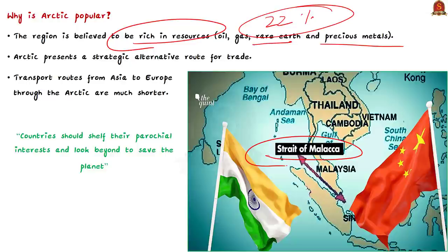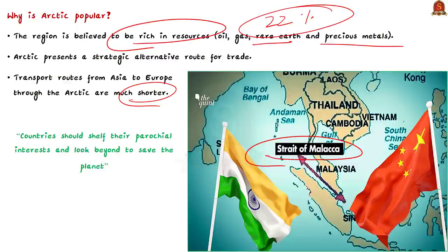The Strait of Malacca is becoming very contentious as traffic increases, and many countries are competing on this trade route. China is now looking for alternative routes through the Arctic Circle to bypass these busy routes. Routes through the Arctic are much shorter — they take less time and consume less energy. This is why many countries are now interested in Arctic trade routes, and China is leading this exploration from the front.